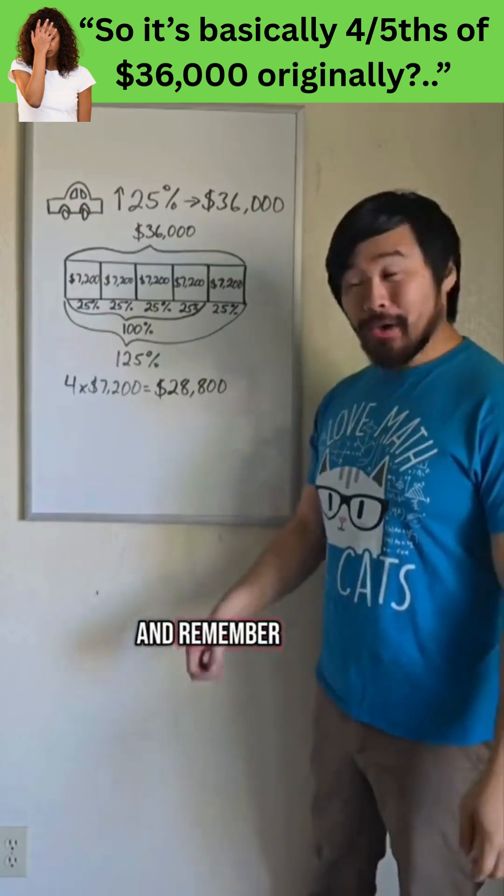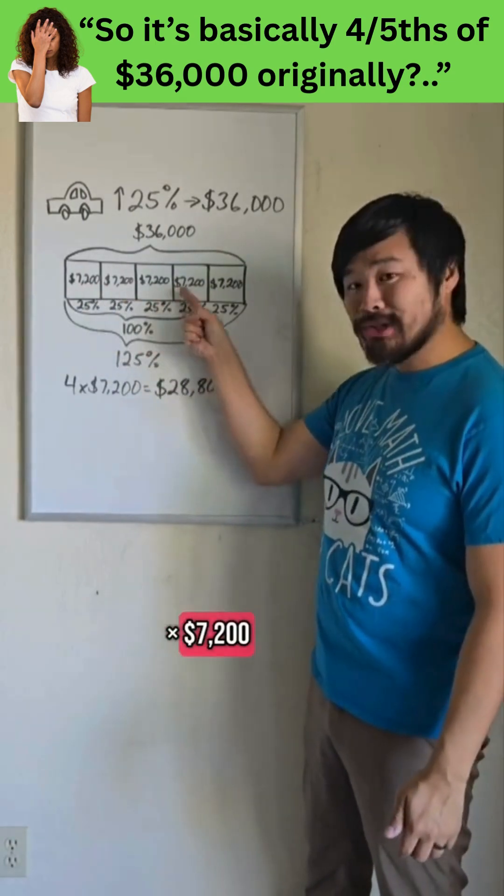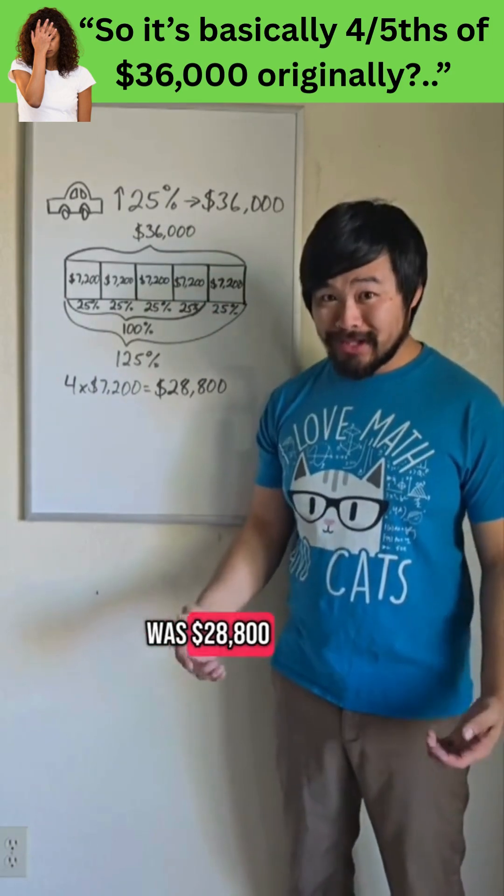And remember, our goal is to find 100% of the cost. So all we have to do is 4 times $7,200 to see that the original price of the car was $28,800.